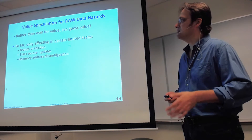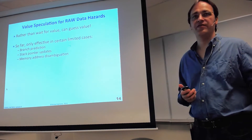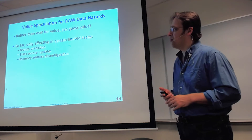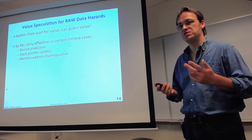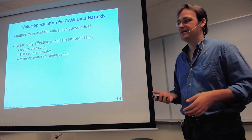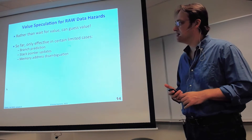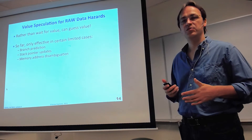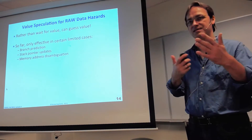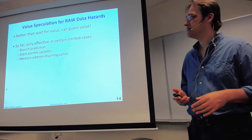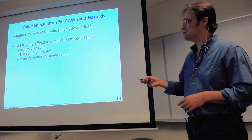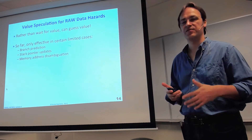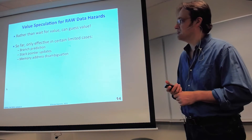The final technique is speculation — guessing the value instead of waiting for it to be produced. This is actually used a lot, but it's only really effective in a few areas. Branch prediction is the big one — you can guess which way a branch goes very accurately today. In x86 machines, they actually do stack pointer updates speculatively to figure out stack addresses earlier. In load-store queues, speculation about memory addresses is used to determine dependencies between loads and stores in flight.